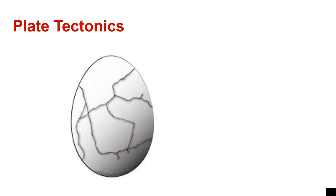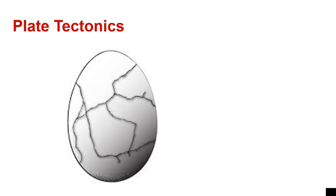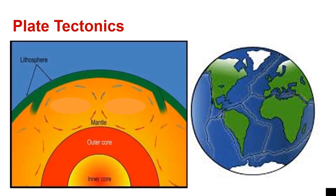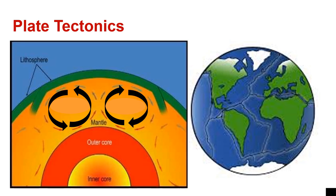Plate tectonics plays an important role when it comes to earthquakes and volcanoes. If you take a look at a hard-boiled egg when it's cracked, that represents what the earth looks like with plate tectonics. Along these cracks are the edges of the plates. And it's in the mantle where there is movement which causes earthquakes and volcanoes.